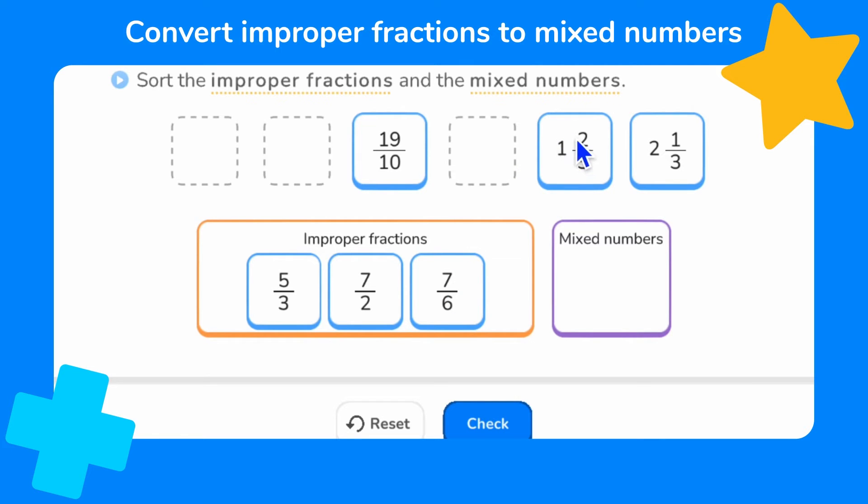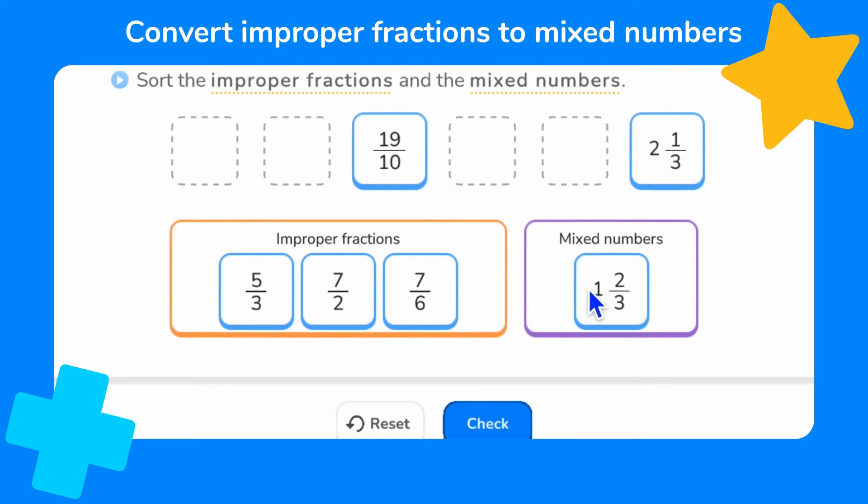Let's look here. We've got 1 whole and 2 thirds, so we have a whole number and a fraction, which must mean 1 and 2 thirds is a mixed number. The same for 2 and 1 third.